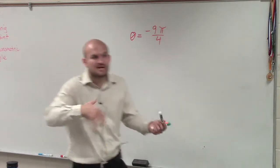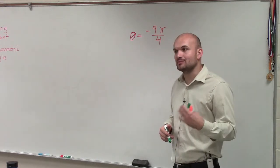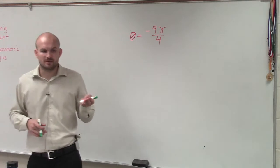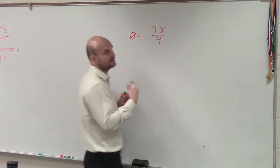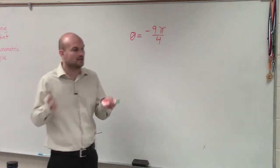Well, yes, adding and subtracting 2π will always give you two angles. But that's not always going to give you the angles that exactly we're looking for. That's not always going to give you the smallest positive and the largest negative.